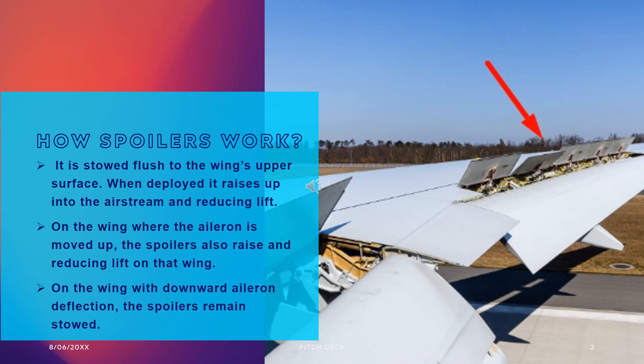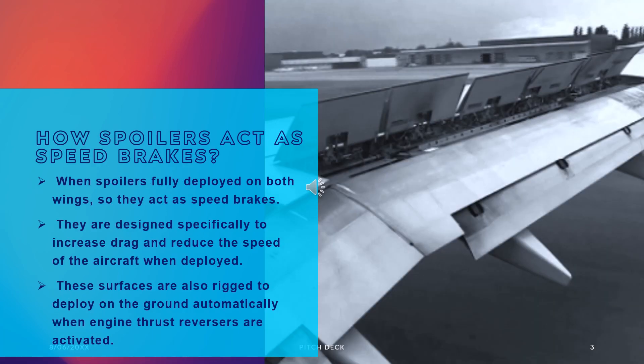On the wing with downward aileron deflection, the spoilers remain stored. As the speed of the aircraft increases, the ailerons become more effective and the spoiler interconnect disengages. Spoilers are unique in that they may also be fully deployed on both wings to act as speed brakes — the reduced lift and increased drag can quickly reduce the speed of the aircraft in flight.